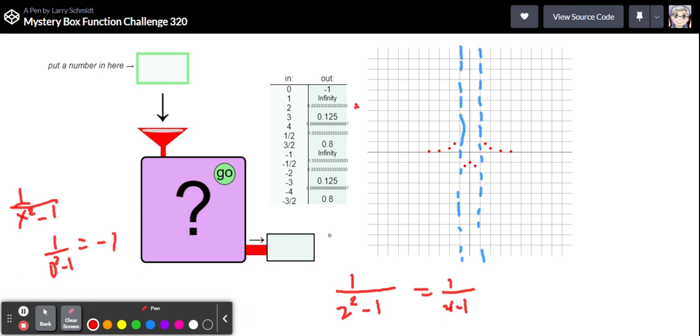Let's try negative three. So one over negative three quantity squared minus one. So negative three squared is gonna be a positive nine. So that would be one over nine minus one or one eighth and I'm getting that point one two five.